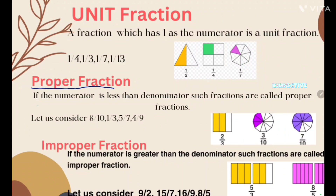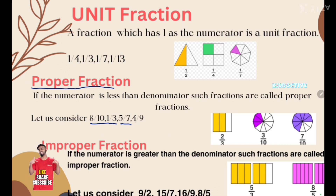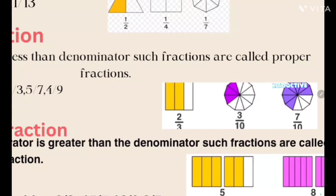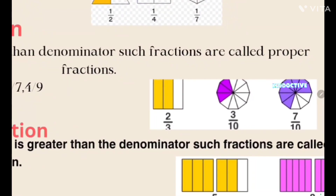What is a proper fraction? If the numerator is less than the denominator — the upper part is called the numerator and the lower part is called the denominator — such fractions are called proper fractions. Examples: eight upon ten, one upon three, five upon seven, four upon nine. See in the image: two upon three — three equal parts, two parts are shaded. The numerator two is less than the denominator.